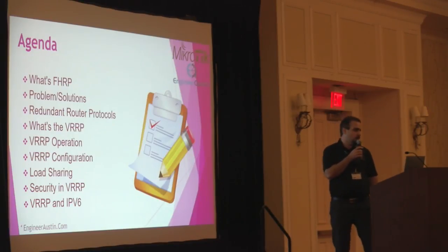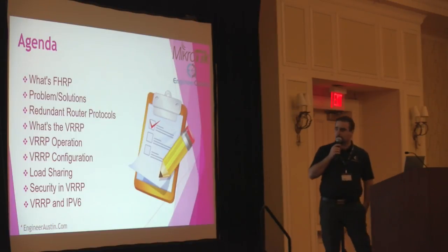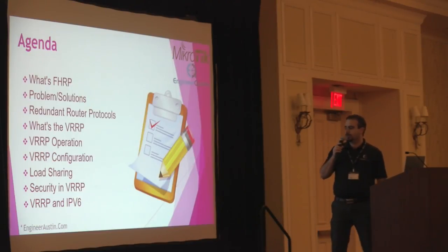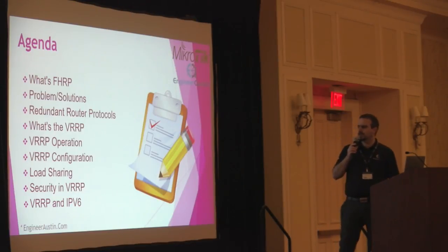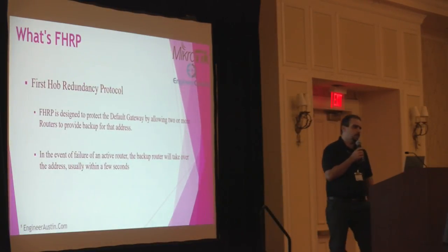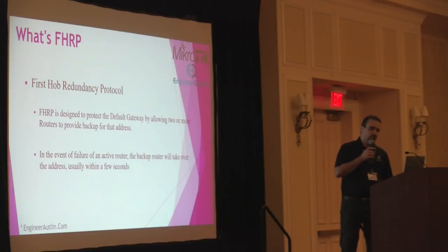Let's jump into the topic. First we will talk about what is the First Hop Redundancy Protocol, what's the main problem and how we can solve it. Then we will review VRRP — Virtual Router Redundancy Protocol — how it works, how to configure it, covering everything about VRRP in order to provide redundancy of the default gateway to hosts connected to our network.